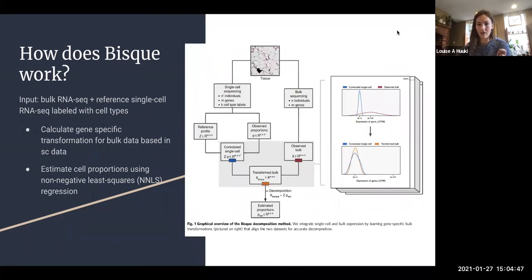The first figure shows an overview of how Bisque works. Like many cellular deconvolution methods, the input is bulk RNA-seq and a reference single cell RNA-seq that is labeled with cell types. The two main points in their method is that they first calculate gene specific transformations in the bulk data based on underlying statistics in the single nucleus data.